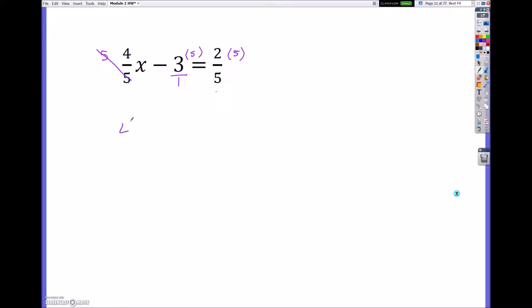So these would cancel. So I would just be having 4x minus 3 times 5 is 15. And that equals, these would cancel, 2. Now I have a much easier way to solve for x. And I would add 15 to both sides. This would give me 4x is equal to 17. And then I just divide both sides by 4 to get the answer of x equals 17 over 4.